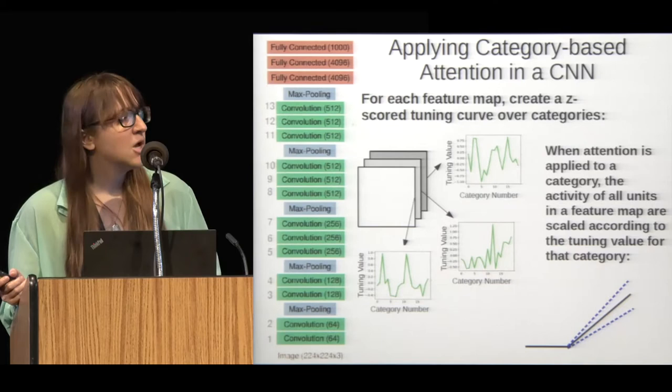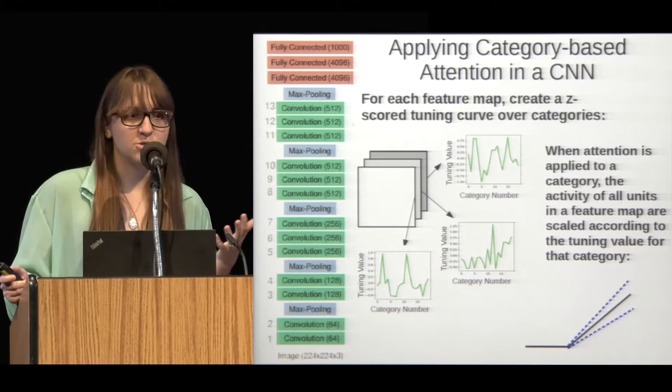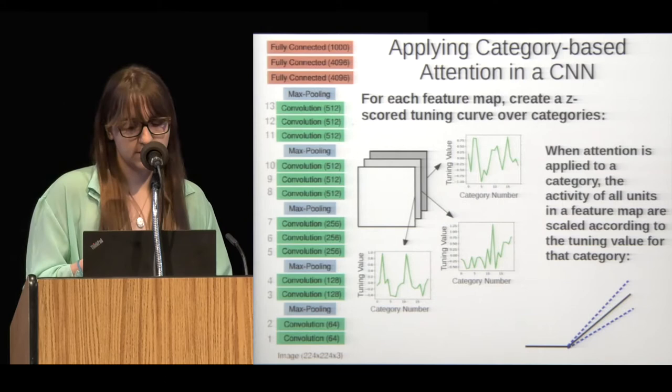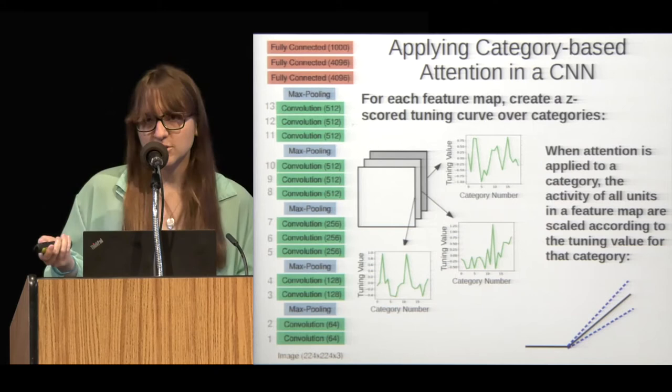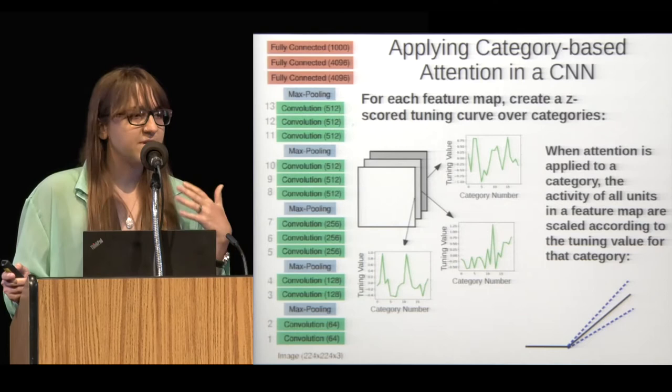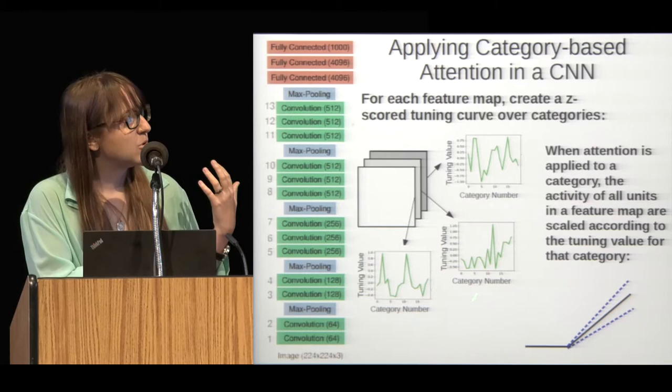How can you apply attention in these networks? The feature similarity gain model says that modulation should be in proportion to the tuning of the individual cell. So the first thing you have to do is get tuning maps for the individual units. I'm showing here some example tuning curves across 20 different object categories, obtained by putting different object category images into the network and recording the responses of different feature maps. Those values are normalized so that positive values mean the feature map prefers a given category — and therefore when attention is deployed to that category, that feature map activity should be scaled upward — while negative values mean the activity should be scaled downward.